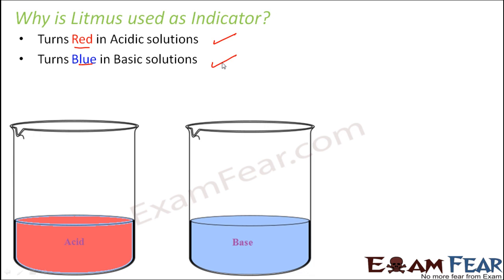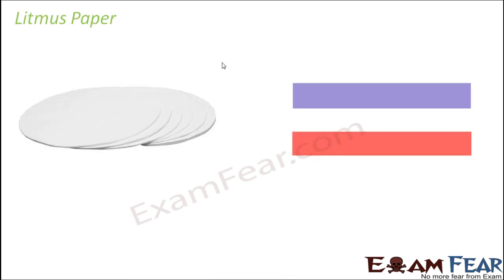Litmus is therefore a very commonly used indicator. To make the process of testing acids or bases more convenient, litmus papers are more commonly used instead of litmus solution, because papers are easier to handle and the test becomes simpler and more convenient.